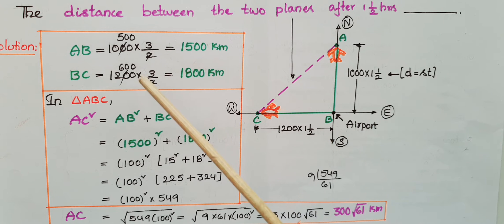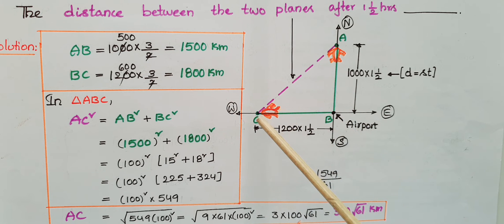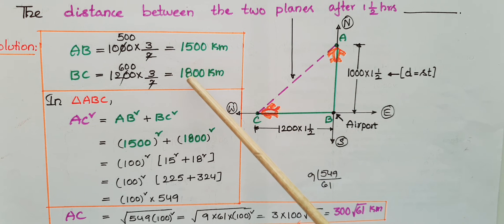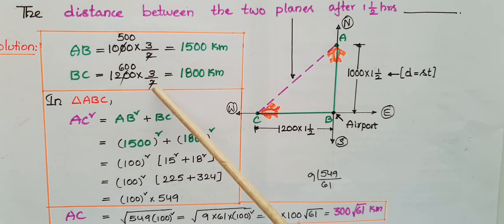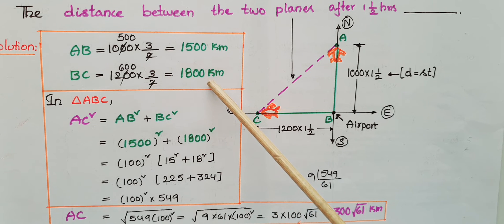BC, that is the distance the second aeroplane travels in 1.5 hours: 1200 × 3/2 = 1800 km.